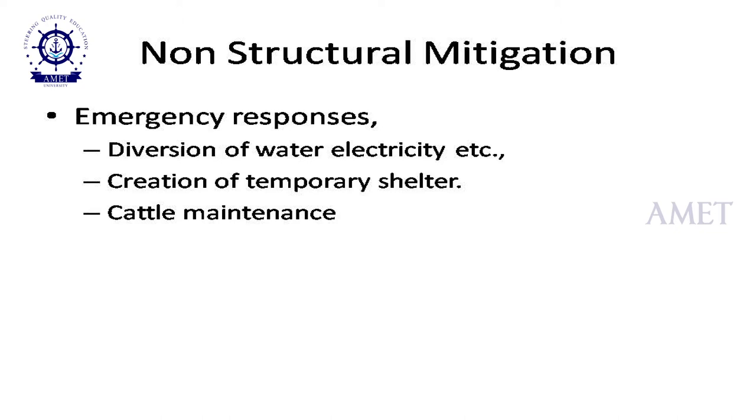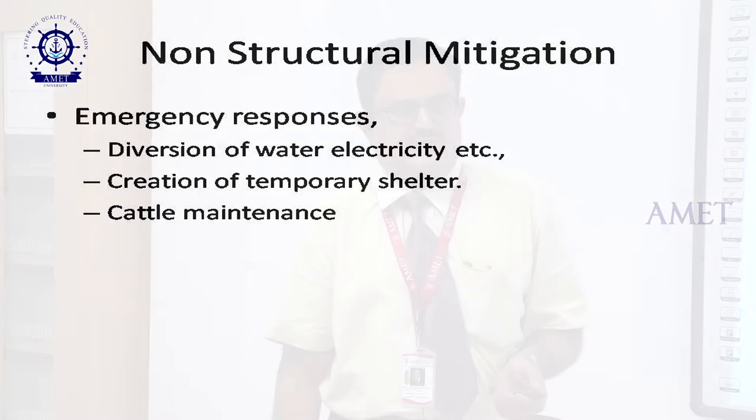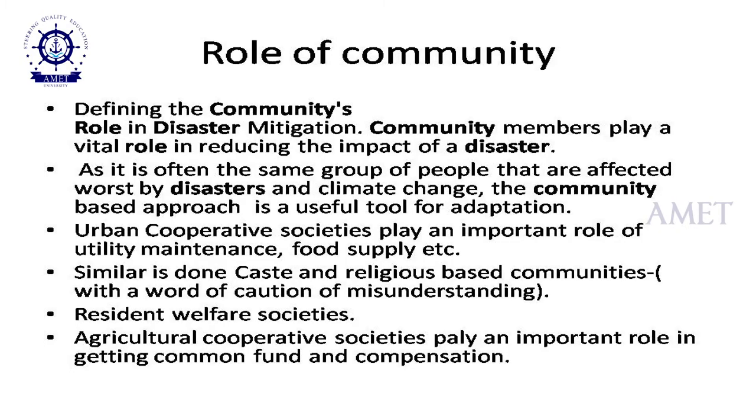We talked about structural mitigation — any structural changes one would like to make. Non-structural mitigation costs money for the government and mainly covers water and electricity diversion, temporary shelters, and cattle maintenance. The community's role includes communication, first aid, and medicines. The community means welfare societies, building societies, and agricultural cooperative societies — all these societies form the community and have to help people. Community-government balancing is absolutely necessary for disaster management.